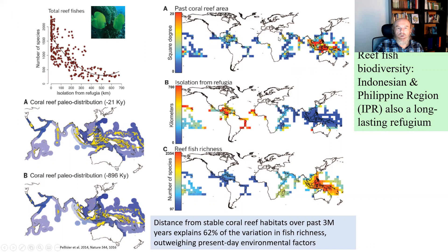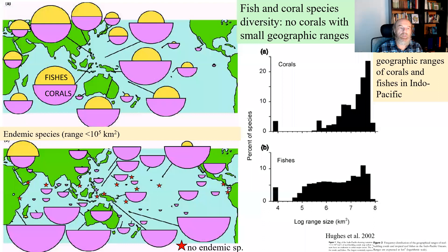Paleo-distribution maps of coral reef area show that the coral reefs in the Coral Triangle were stable for at least the past 3 million years, supporting the refugium hypothesis. This historical stability, seen in distributions less than 1 million years old, helps explain the current diversity of reef fishes by their dispersal from and isolation relative to that center.